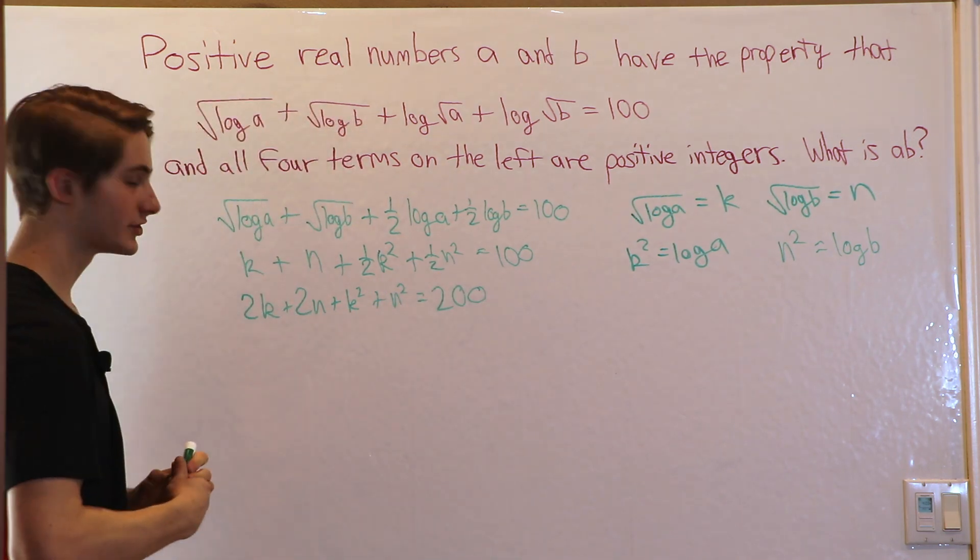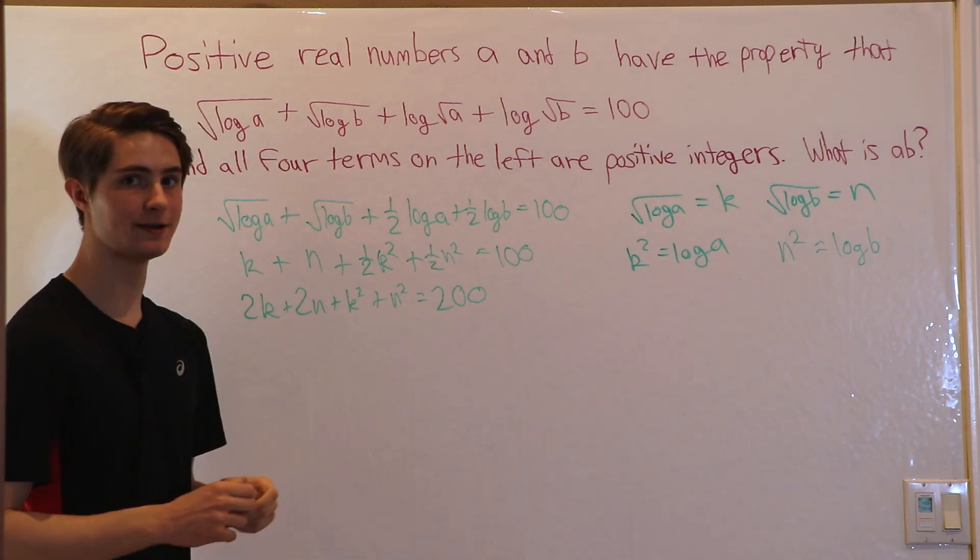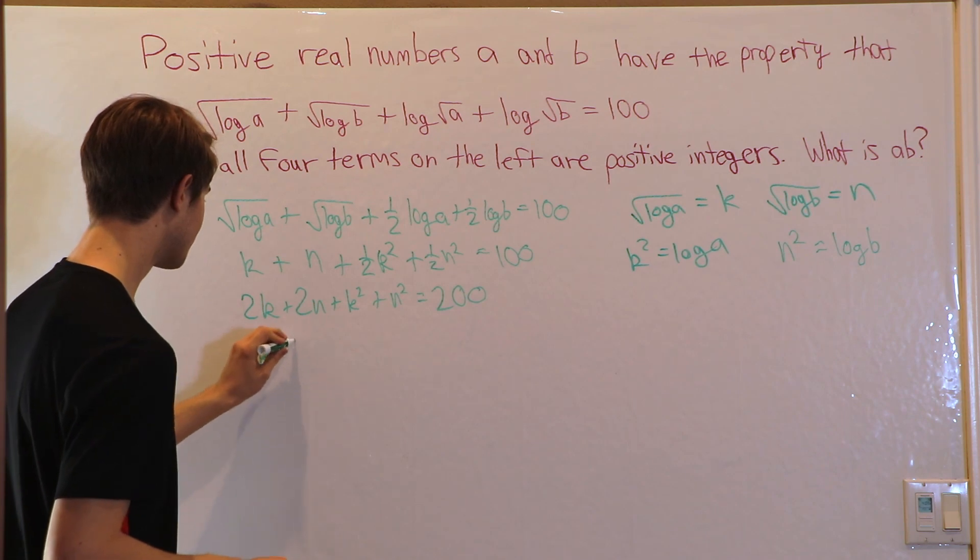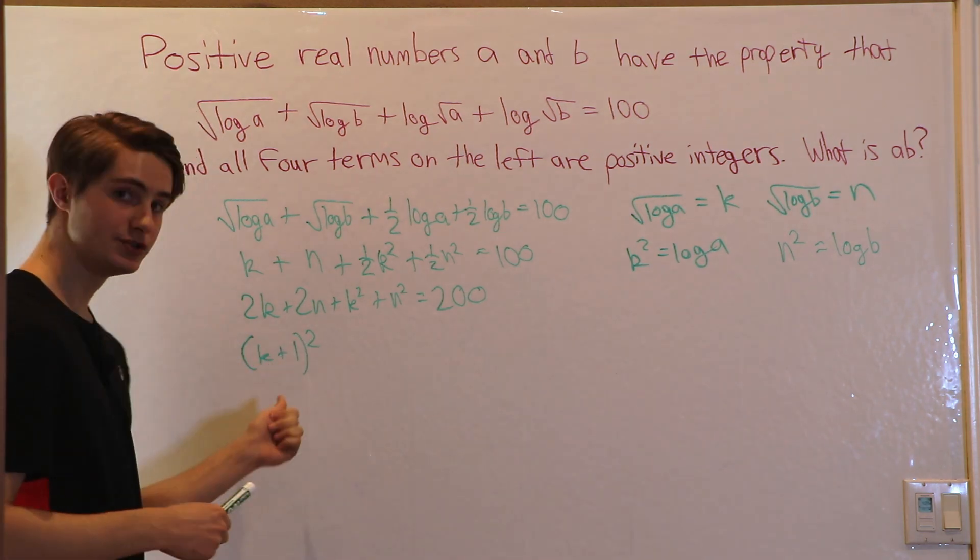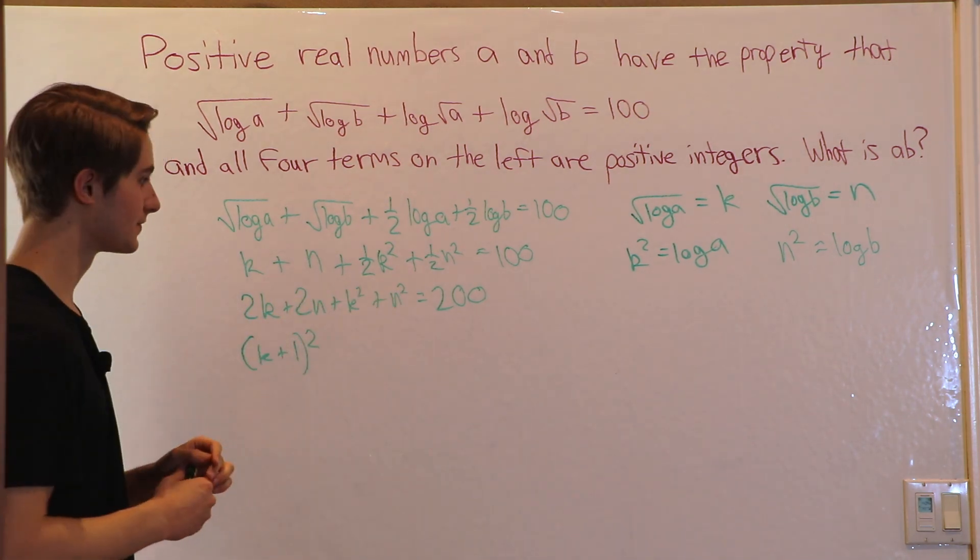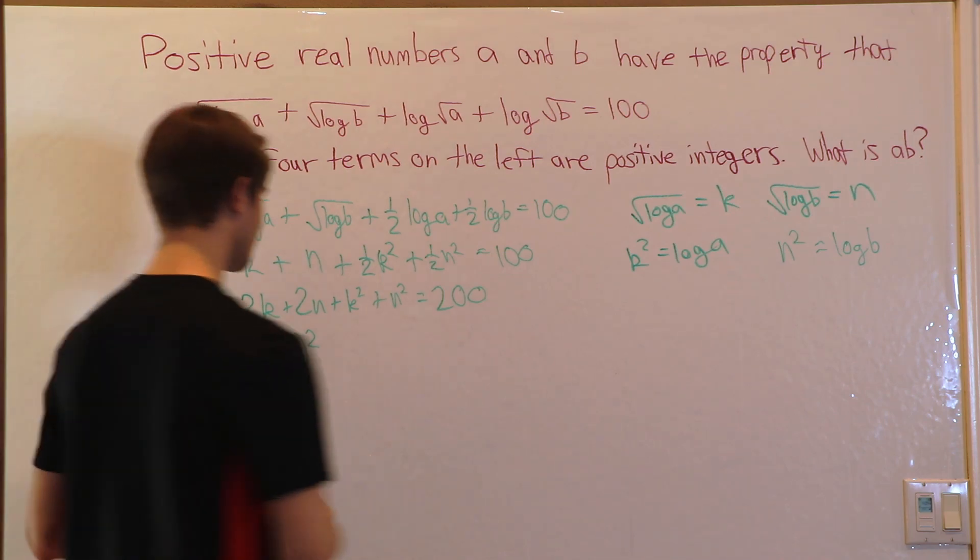What we see in this equation is we have K squared plus 2K and we have N squared plus 2N. And that reminds me of the formula for K plus 1 squared. This is K squared plus 2K plus 1. But we don't have a plus 1 on this side. However, we can get a plus 1 if we just add 1 to both sides of the equation.